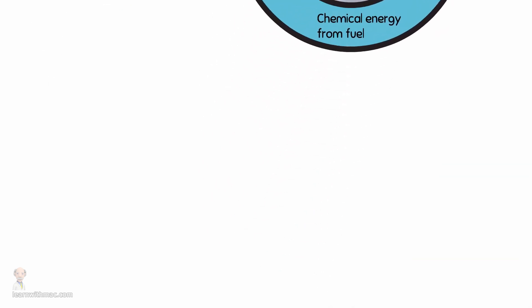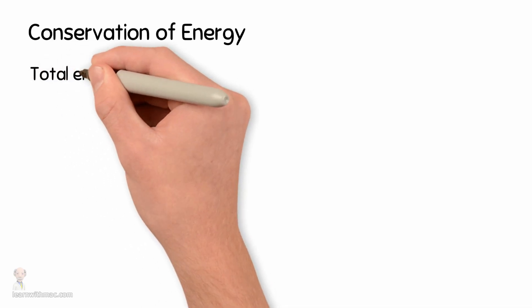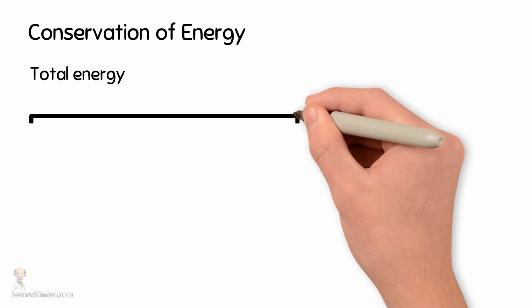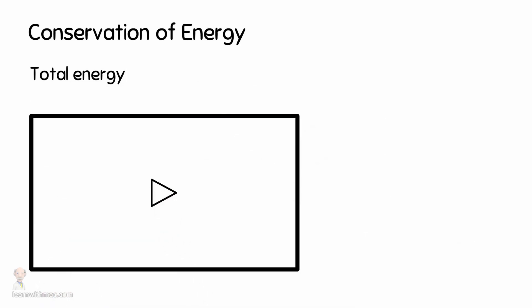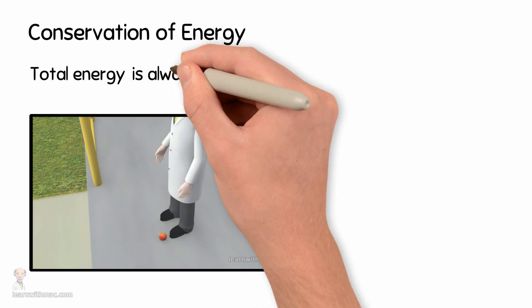Just think about that for a moment. What this law tells us is that if we calculate the total energy before we do something, for example drop an apple to the ground, and then calculate the total energy just before the apple hits the ground, then we will calculate the exact same amount of energy.